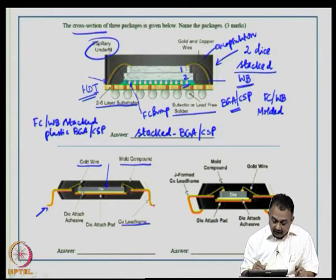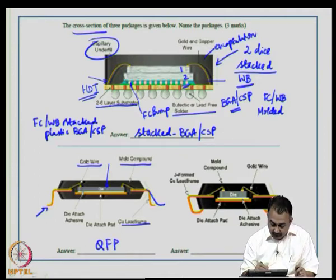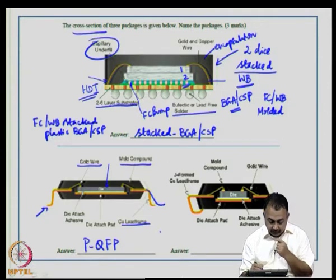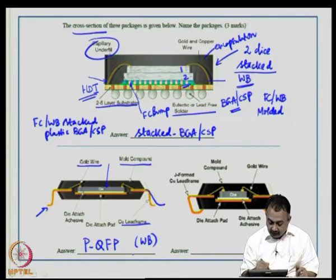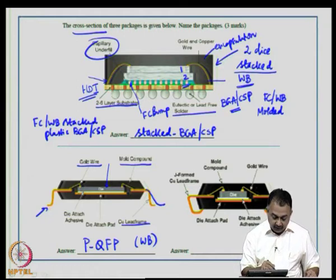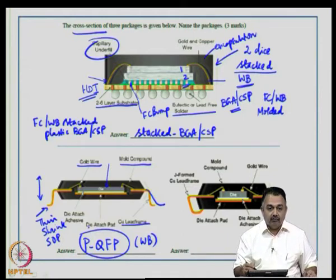The lead is not gull-wing shaped, so this is a normal quad flat pack configuration — a QFP. You can call it a plastic quad flat pack (PQFP). PQFPs are well known to have wire bonds when you look at the cross-section. If you have information about height, you can further specify whether it is a thin, shrink, or small outline package.